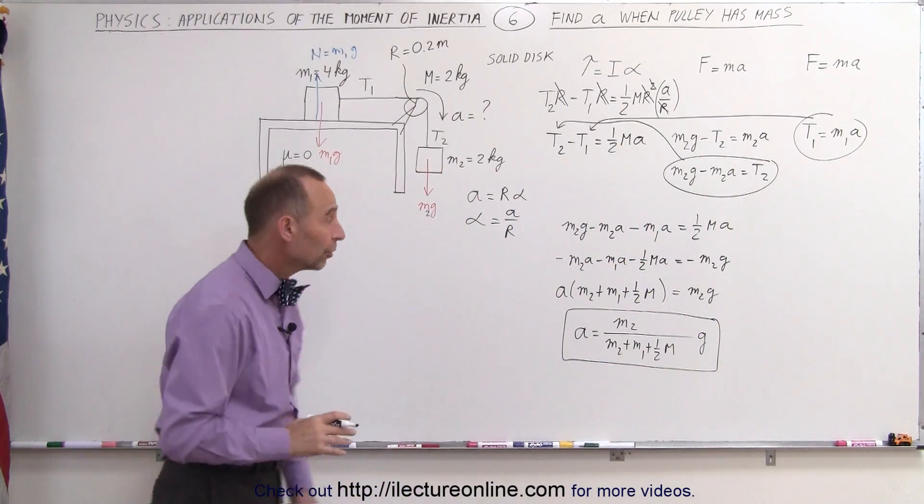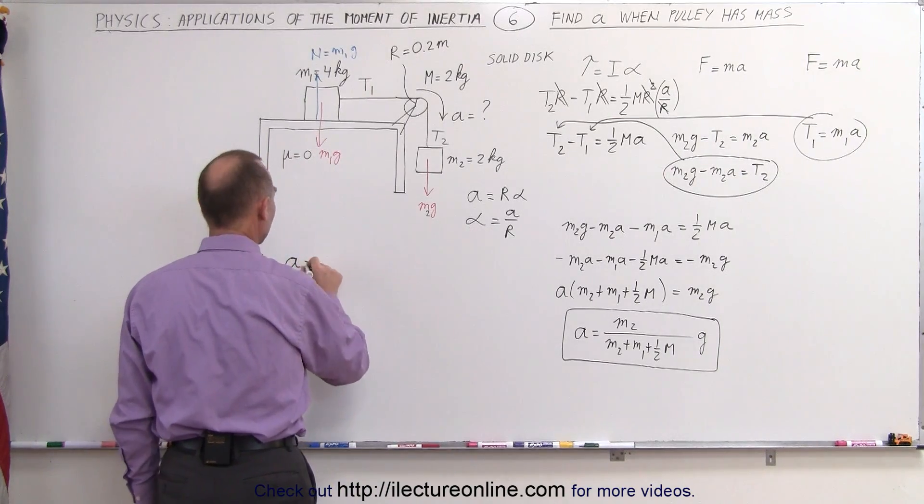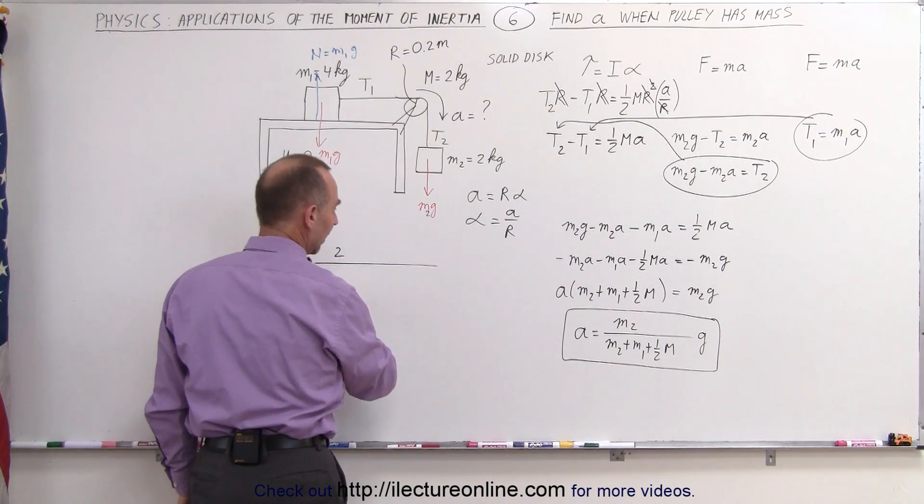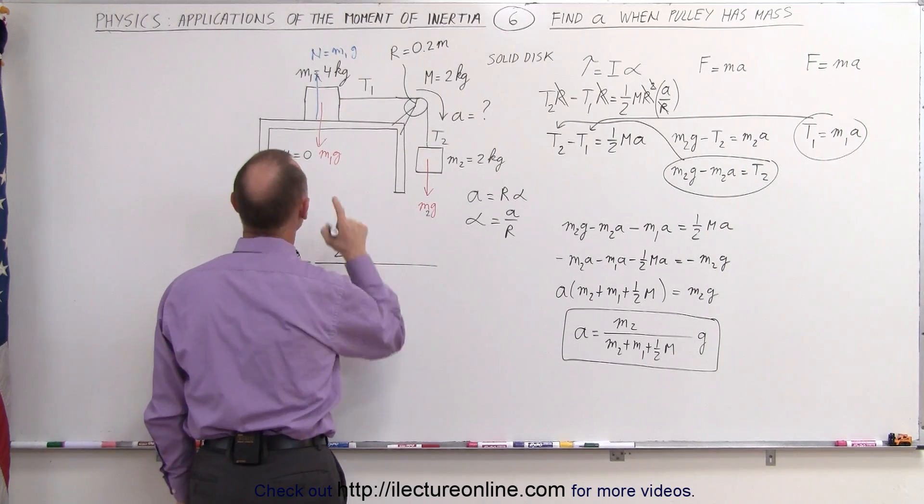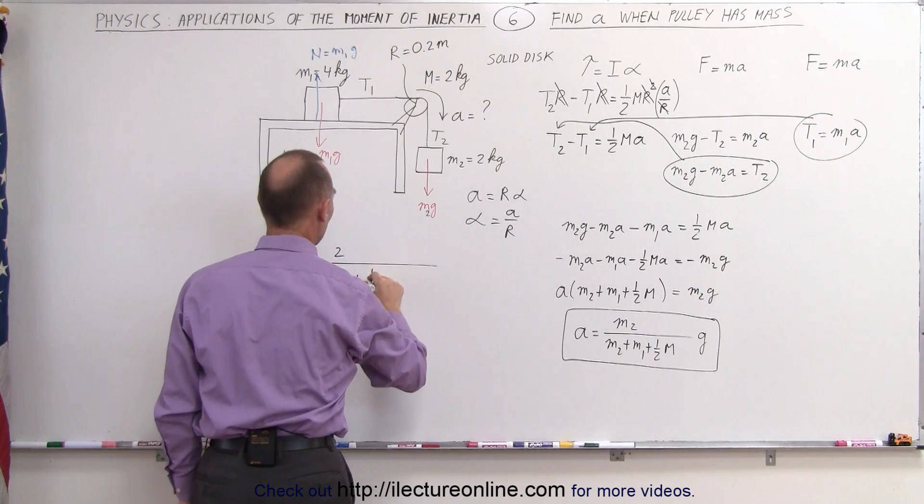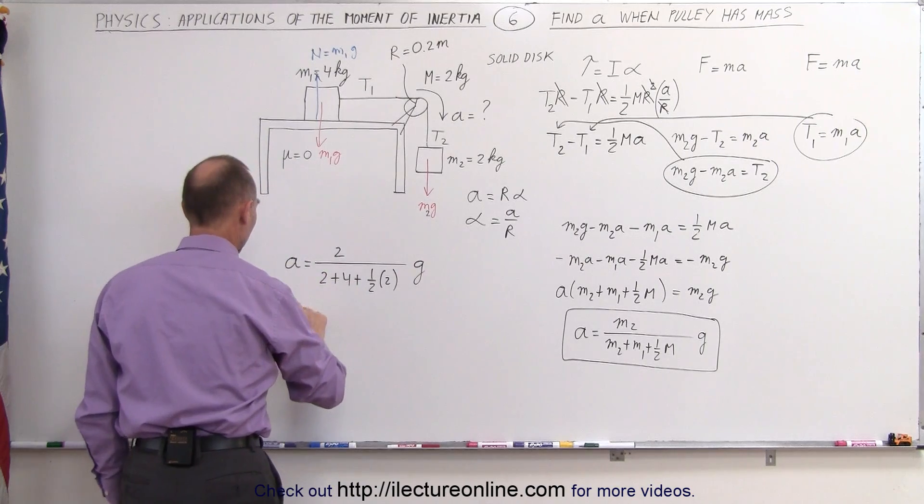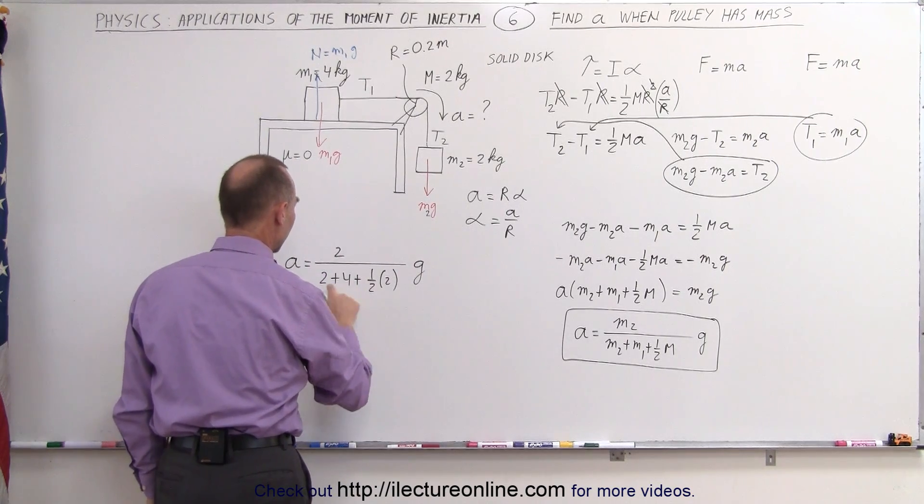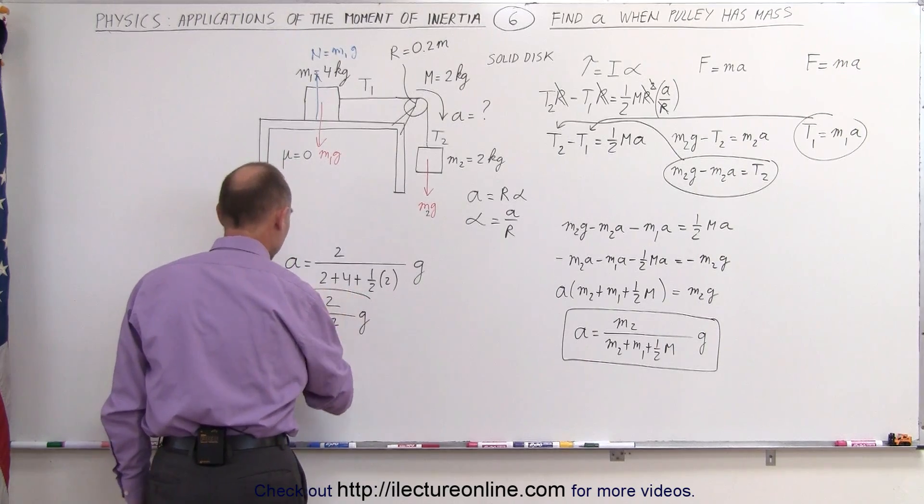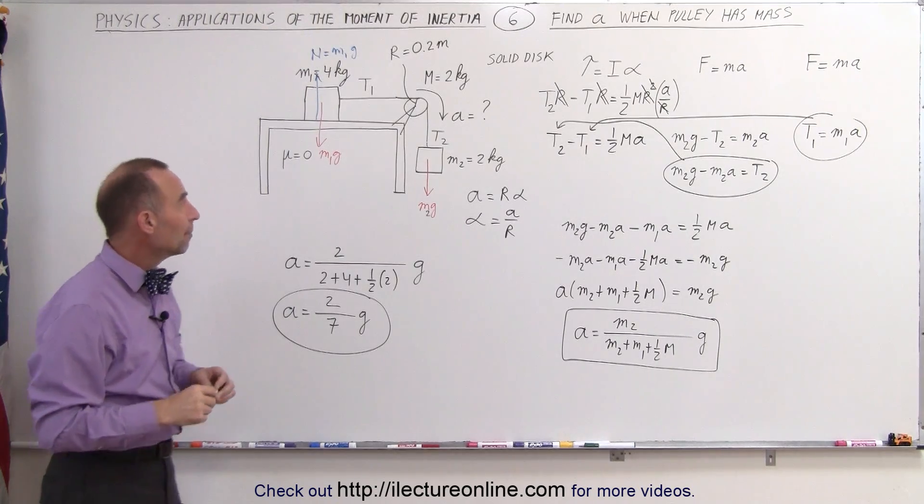Now since we were given all the numbers, let's go ahead and actually calculate the acceleration. We can then say that A is equal to M2, M2 is equal to 2 divided by M2 which is 2 plus M1 which is 4 plus one-half the mass of the pulley, one-half of 2, that would be one-half times 2, and multiply times g. Acceleration is equal to 2 divided by 2 plus 4 is 6 plus 1 is 7, 2 sevenths g.